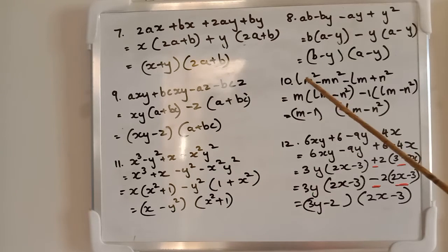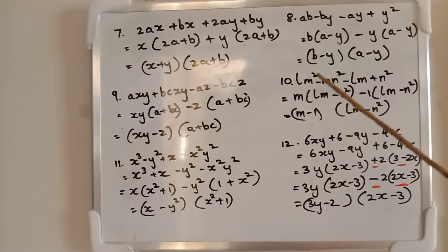Next 10: lm² - mn² - lm + n². In this, what's common? m. Put lm - n² inside the bracket. Here minus sign, take it out. Keep -1 times (lm - n²). What do you do? (m - 1)(lm - n²).